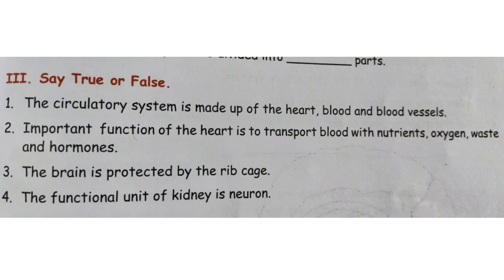Number 2: An important function of the heart is to transport blood with nutrients, oxygen, waste, and hormones. Yes, it is also true — Number 2 is true. Number 3: The brain is protected by the rib cage. No — the brain is not protected by the rib cage. Number 3 is false.